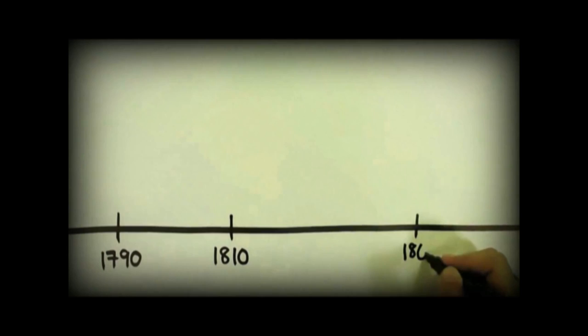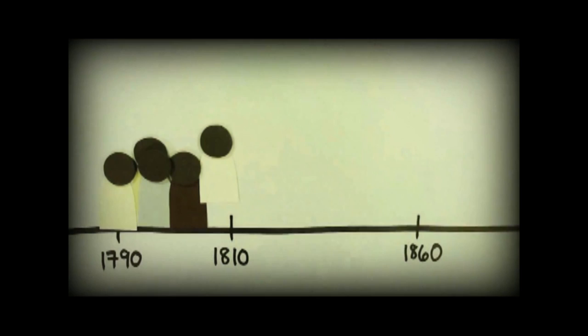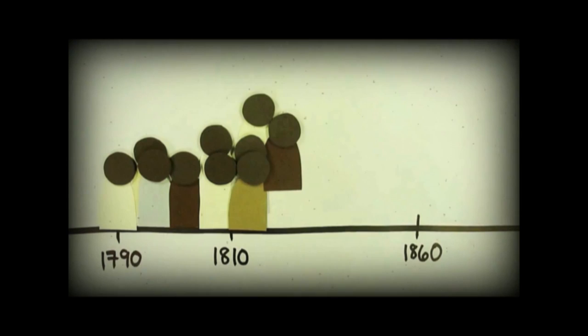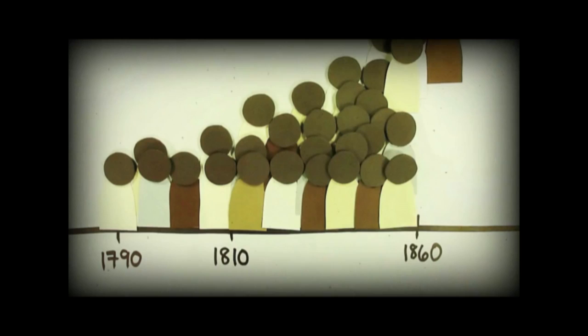The cotton gin and the demand of northern and English factories recharted the course of American slavery. In 1790, America's first official census counted nearly seven hundred thousand slaves. By 1810, two years after the slave trade was banned in America, the number had shot up to more than one million.